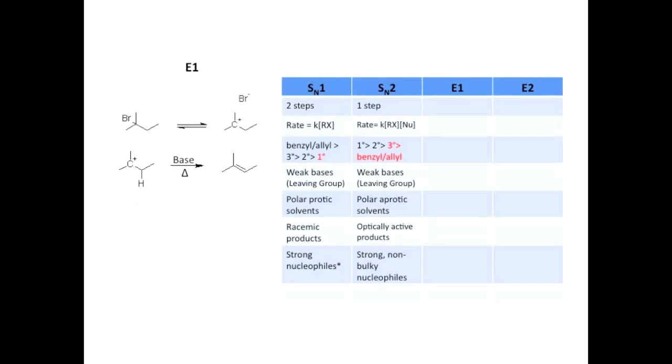The second step is different though. In E1, a base pulls off a beta proton, which then gives its electrons to the carbocation, resulting in a double bond. That's the main difference between SN1 and E1. SN1 switches out a leaving group for another nucleophile, while E1 produces an alkene.